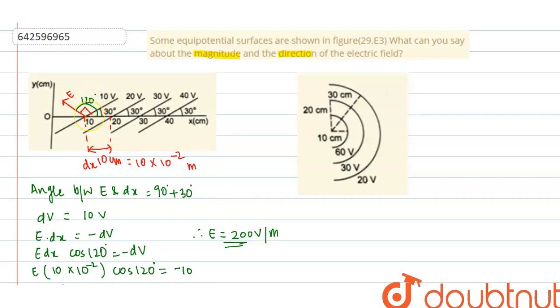So now let us take the second case. For the second case also, the electric field is always perpendicular to the equipotential surface. So these are equipotential surfaces, and let this point be A, and this is dr. And the electric field is also like this.